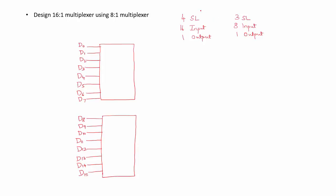Now for the 16-to-1 multiplexer, the 16 input lines are done. The 16-to-1 multiplexer has 4 select lines whereas the 8-to-1 multiplexer has only 3 select lines: s2, s1, s0 for each MUX. Let us connect these select lines together.